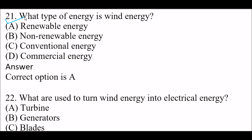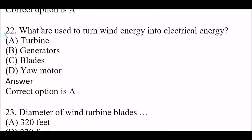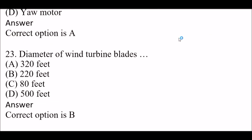Next question: what type of energy is wind energy? Option A: renewable energy. Option B: non-renewable energy. Option C: conventional energy. Option D: commercial energy. Right answer is Option A — renewable energy. Next question: what is used to turn wind energy into electrical energy? Option A: turbine. Option B: generators. Option C: blades. Option D: motors. Right answer is Option A — turbines are used to turn wind energy into electrical energy.